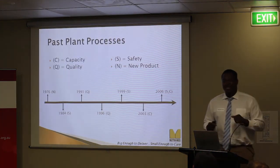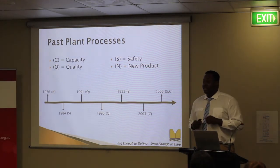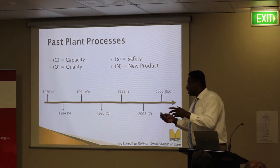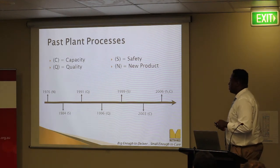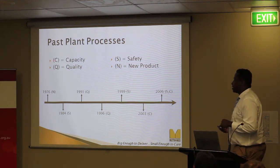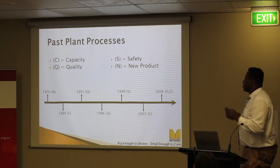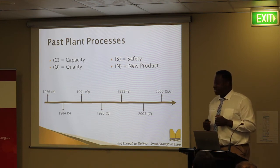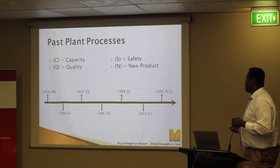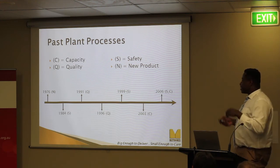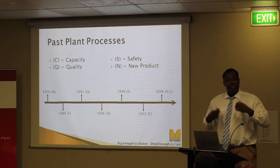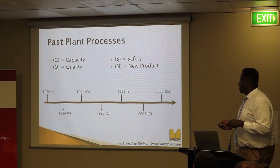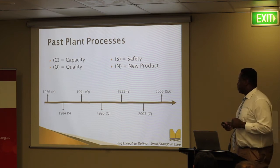So, past plant processes. As part of my research, I needed to look into the history of the plant and identify dates when the quarry had significant upgrades. I put this into a timeline, denoting the reason for each upgrade as a letter. C stands for capacity upgrades, which occurred in 2003 and 2006. Q was for quality improvements, likely customer-based requests, occurring in 1991 and 1996. And S is for safety — components exceeding their useful economic life or otherwise unsafe — occurring in 1984, 1999, and 2006. N was for a new product, which happened in 1976 when the quarry began making concrete sand.